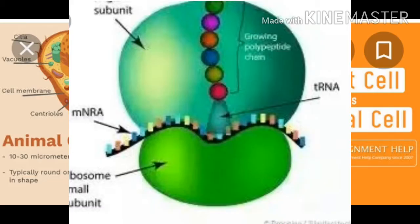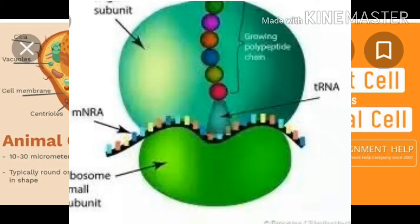Ribosomes are small granular structures without a membrane, visible only under an electron microscope. They are usually found attached on the outer surface of the endoplasmic reticulum as well as freely in the cytoplasm. Ribosomes are the smallest known cell organelles and are the only organelles present in all types of cells. A group of ribosomes is called polysomes.